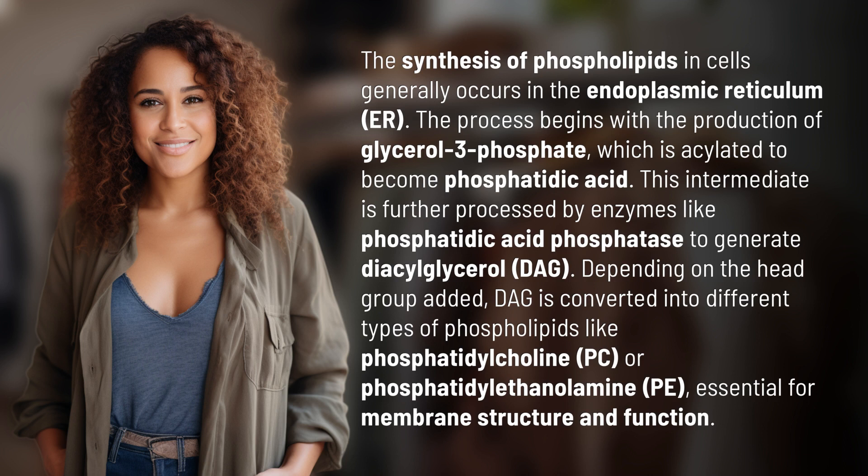Depending on the head group added, DAG is converted into different types of phospholipids like phosphatidylcholine (PC) or phosphatidylethanolamine (PE), essential for membrane structure and function.